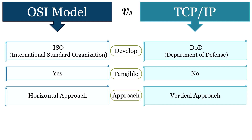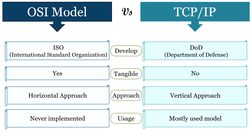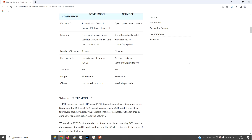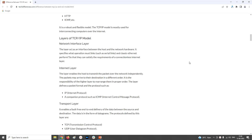OSI model has a horizontal approach, whereas TCP/IP model has a vertical approach. OSI is never implemented, whereas TCP/IP is the most used model. So this is all about the differences between the TCP/IP model and the OSI model. For more details you can refer to our official website, techdifferences.com — the URL is provided in the description below.